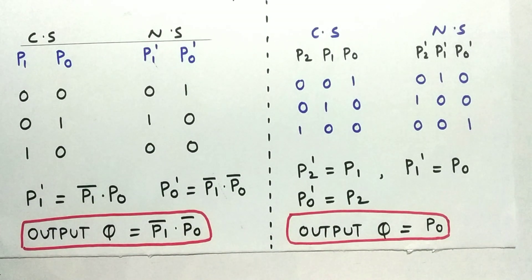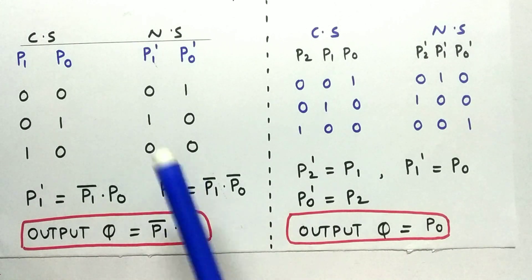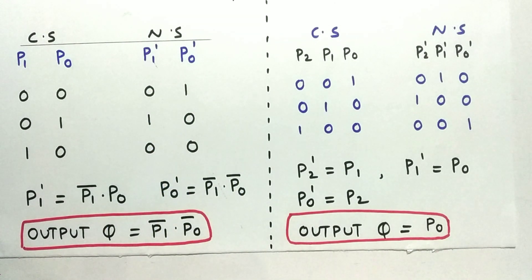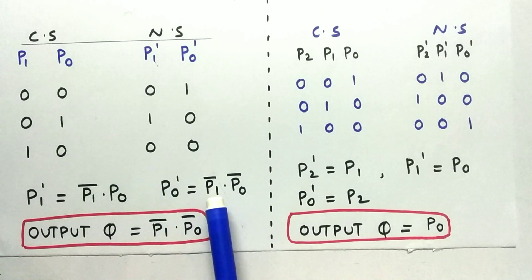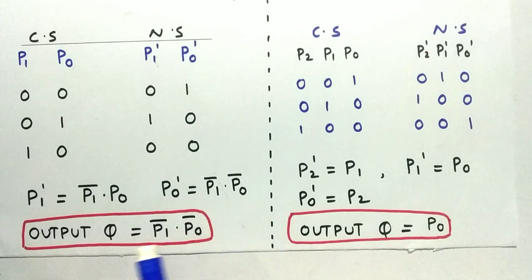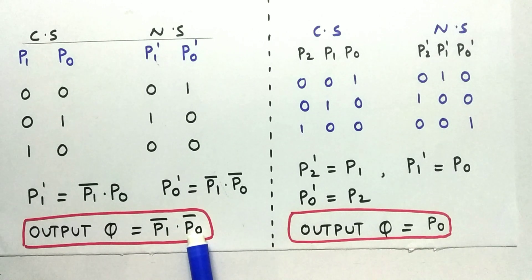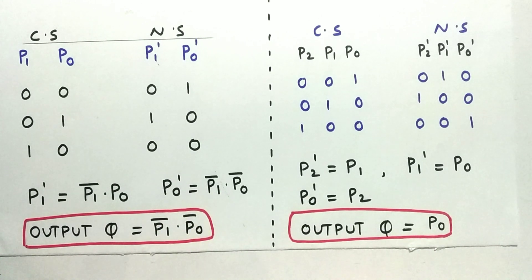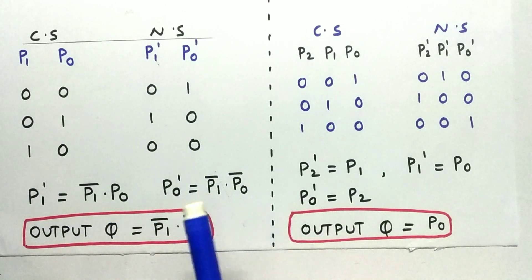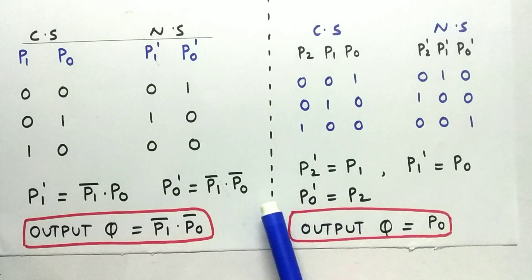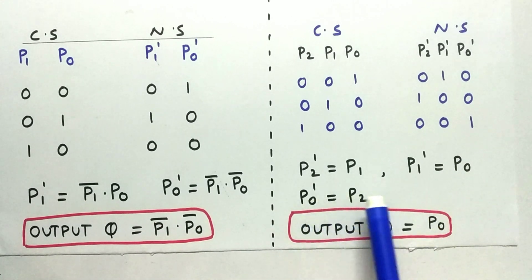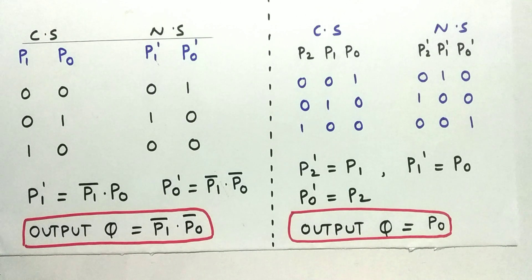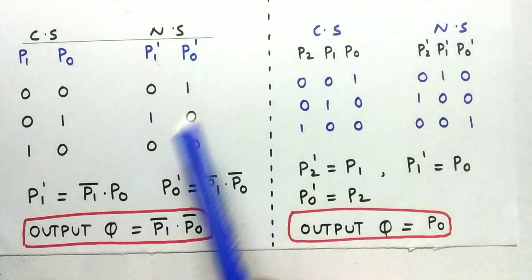Based on current state and next state, let's get the values of the next state P1- and P0- for our circuit. P1- will be P1_bar · P0, and P0- will be P1_bar · P0_bar, and Q will be P1_bar · P0_bar. You can solve these using a small K-map. For one-hot encoding, the outputs are: P2- = P1, P1- = P0, P0- = P2, and the output Q = P0. I recommend doing the K-map yourself for better understanding.